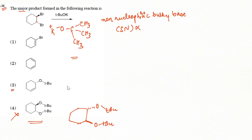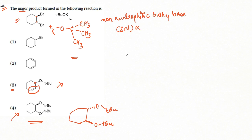Similarly, in option number three we see two reactions: one is a substitution on the carbon connected to bromine, and the other is an elimination product. Since this is a non-nucleophilic base, mixed substitution and elimination as in option three is also an incorrect option.